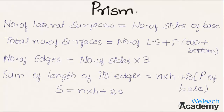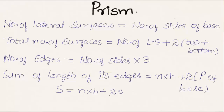In conclusion: the number of lateral surfaces of a prism equals the number of sides of the base. The total number of surfaces equals lateral surfaces plus two (top and bottom). The number of edges equals number of sides × 3. The sum of lengths of edges is given by n × h + 2s, where s is the perimeter of the base.